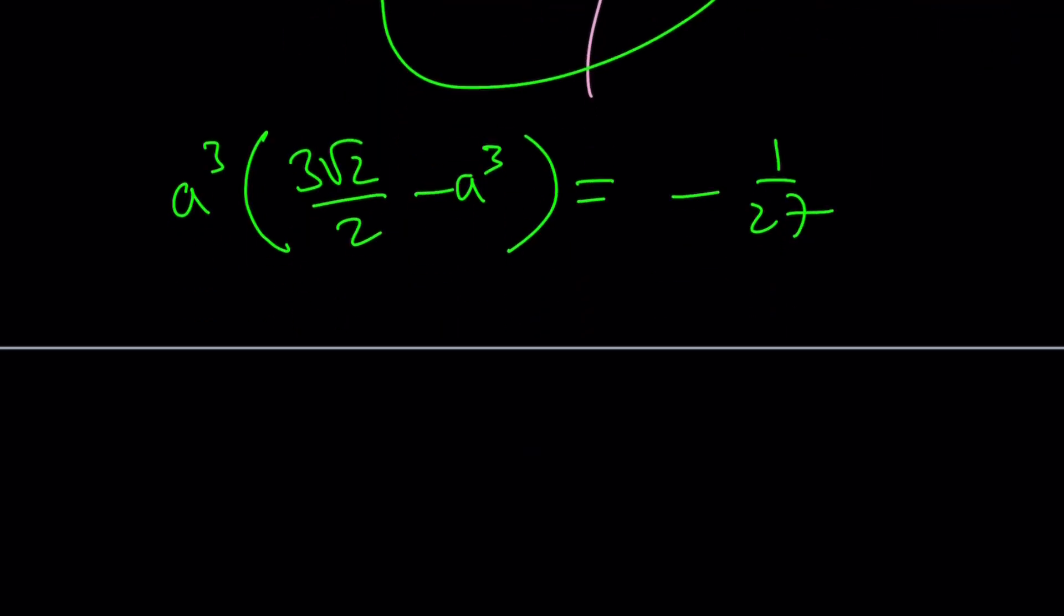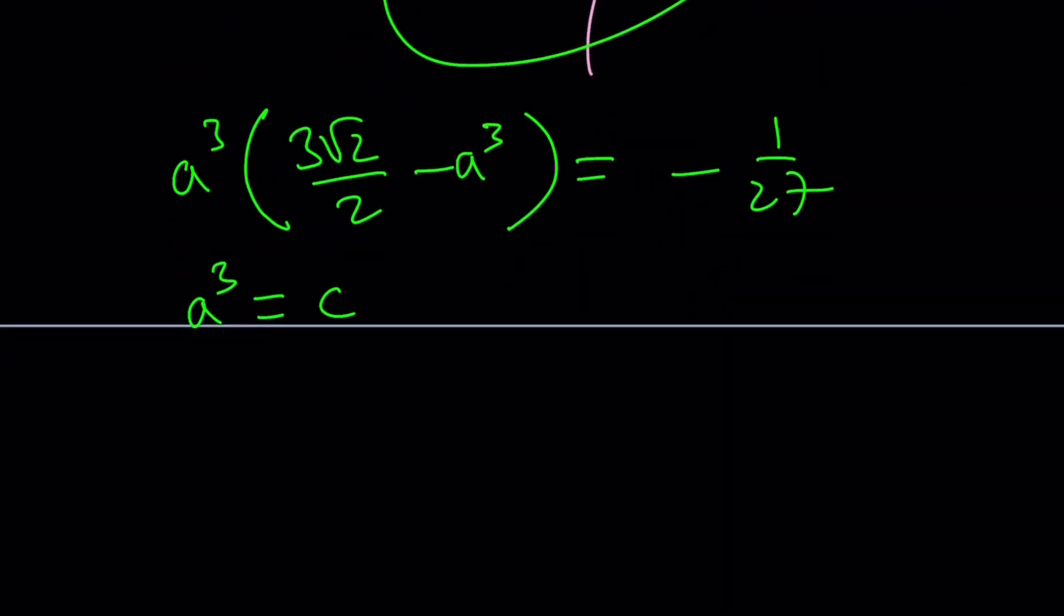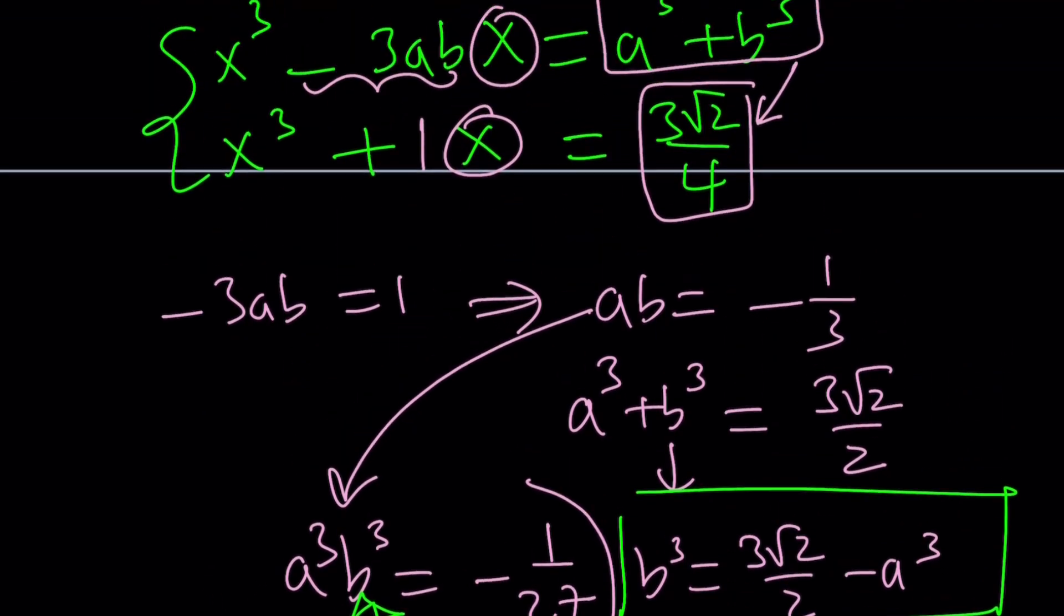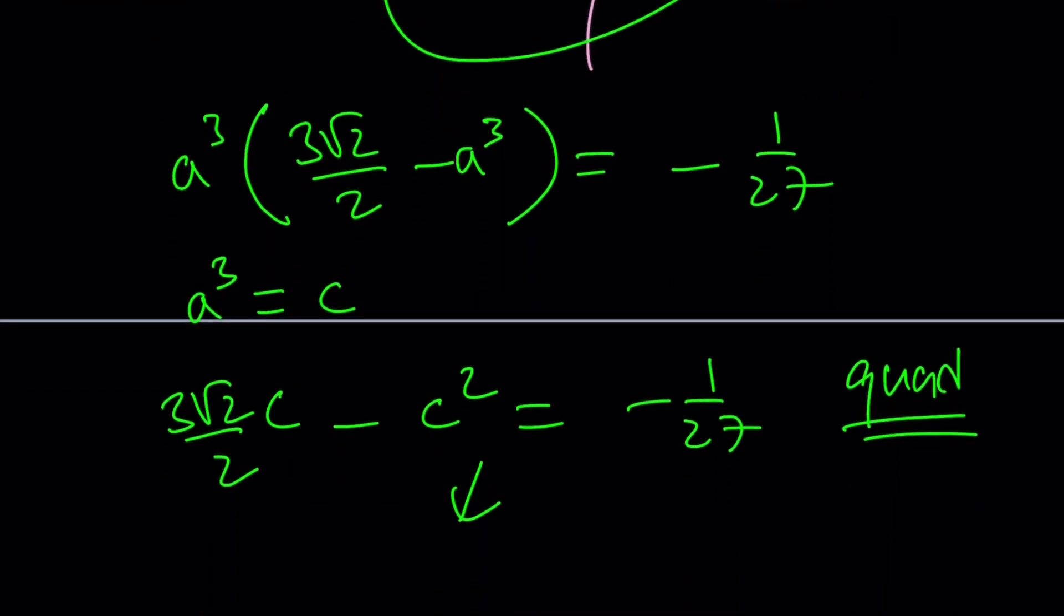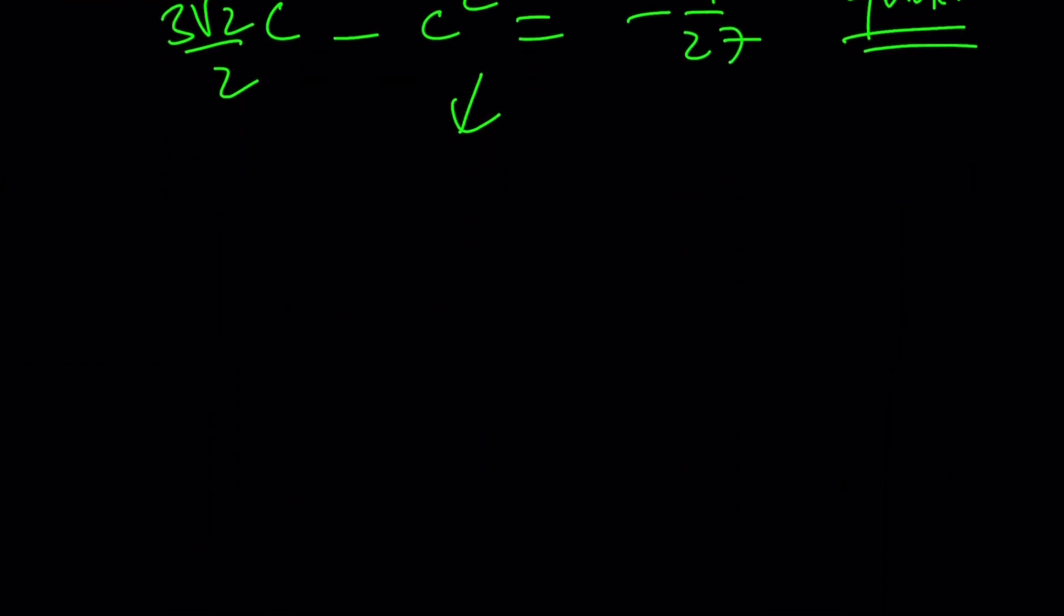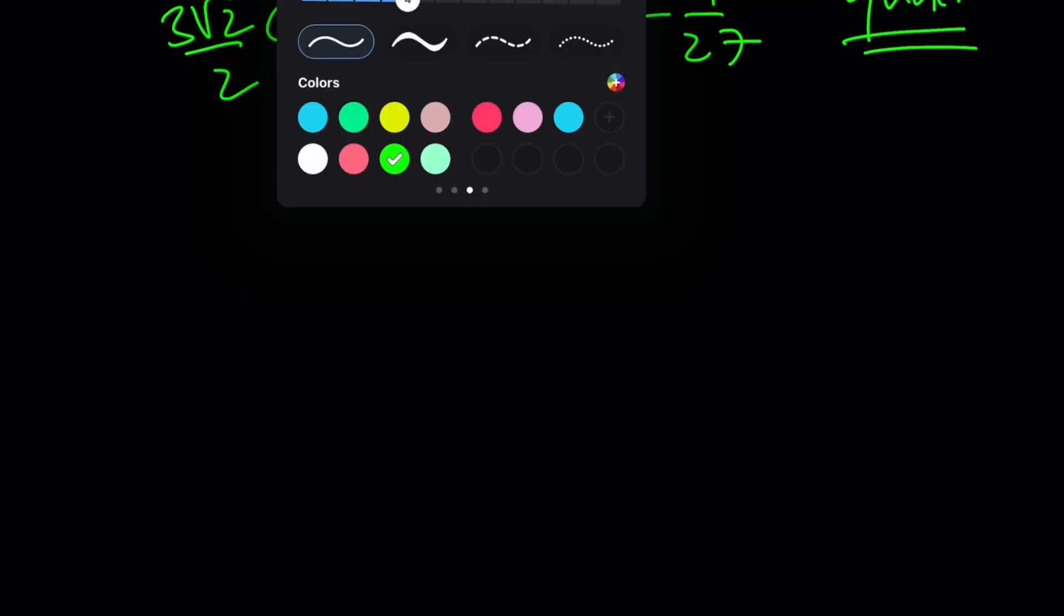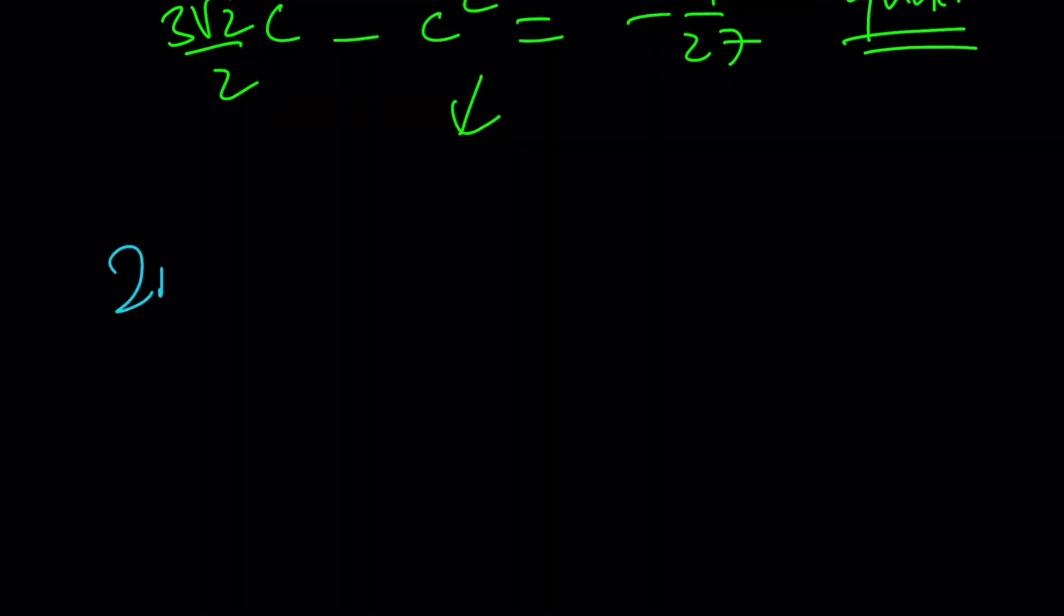And we get the following. a³ multiply by (3√2/2 - a³) = -1/27. How nice, right? Radicals, fractions, so on and so forth. So much craziness going on. Okay. But one thing is going to make things easier. If you set a³ equal to c, because I already used a and b, remember.